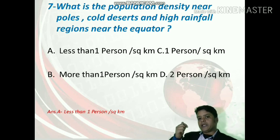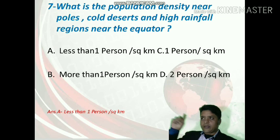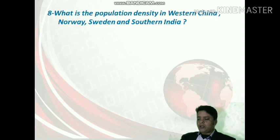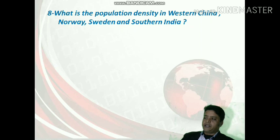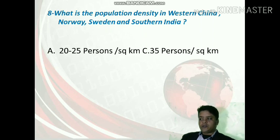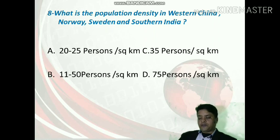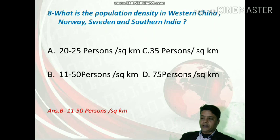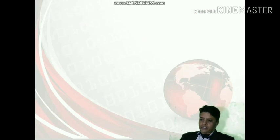This includes the north and south pole areas — in the north pole and Siberian plains, the population is very less. Moving to the next question: what is the population density in western China, Norway, Sweden, and southern India? The options are 20–25, 35, 11–50, or 75 persons per square kilometer. The correct answer is option B — 11 to 50 persons per square kilometer — the same density applies in Norway, Sweden, southern India, and western China.